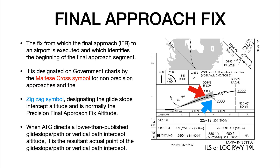Now another important point: when ATC directs you to a lower-than-published glide slope or path or vertical path intercept altitude, it's the actual point at the glide slope or path or vertical path intercept where the Final Approach Fix is. And we're going to look at an example of that a little bit later.